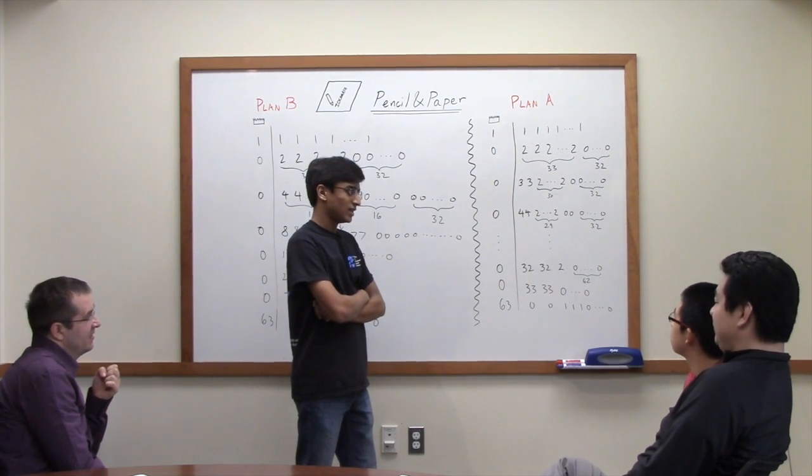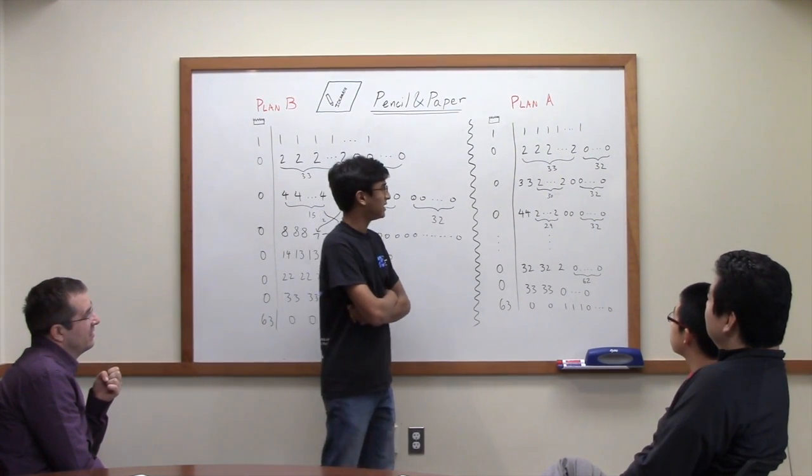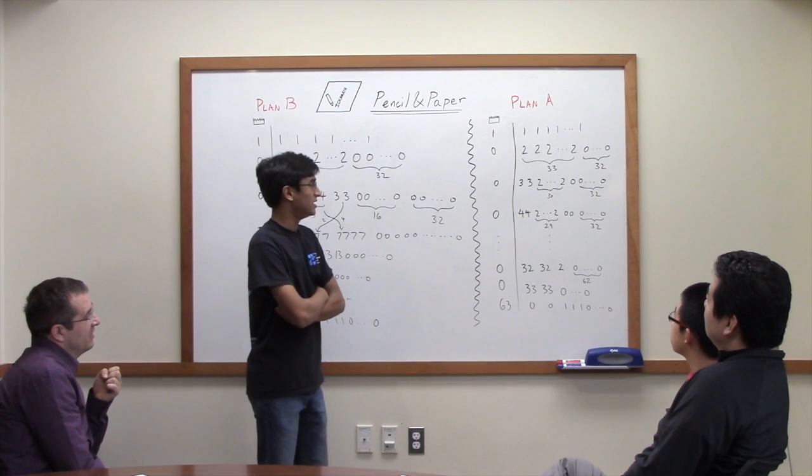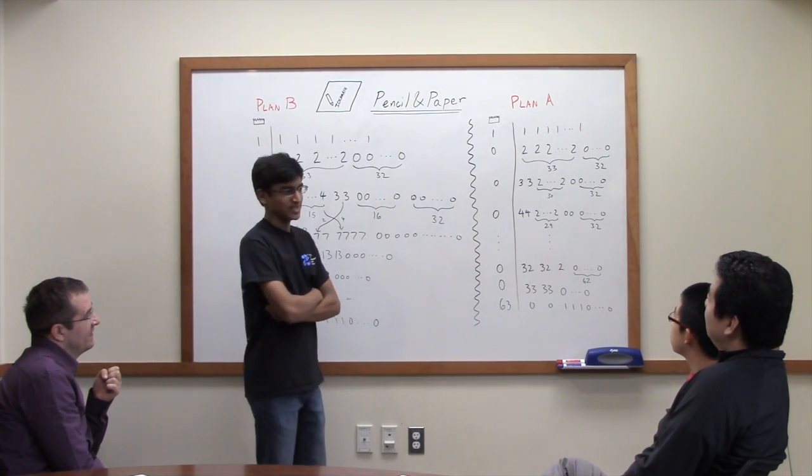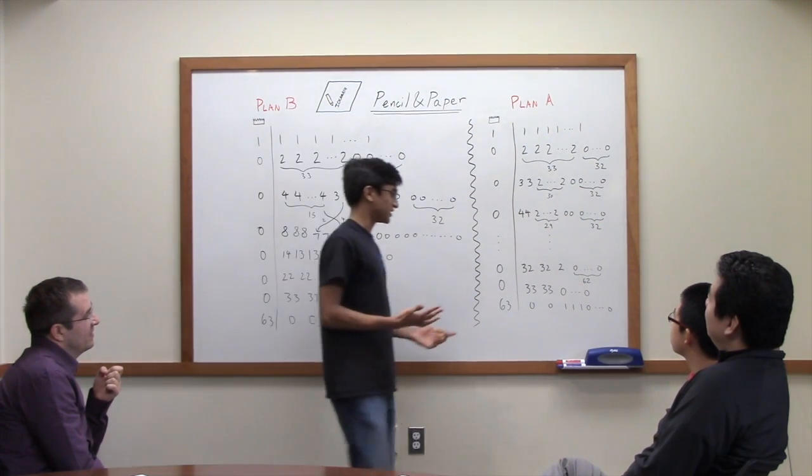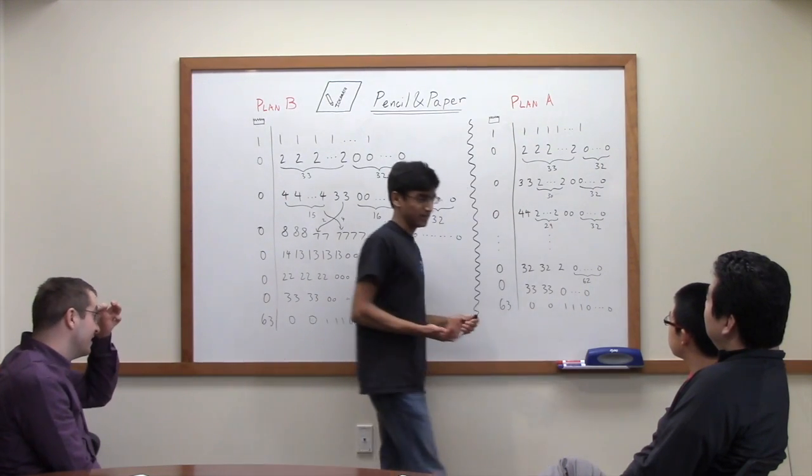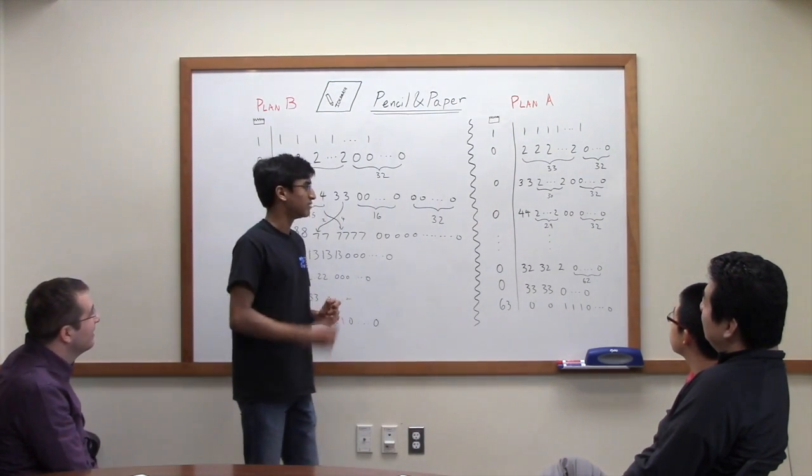So it turns out that in the end the king is able to exploit the system to get quite a bit of money. So the question is how much money can he actually get? How will he do it? And why is it the maximum?